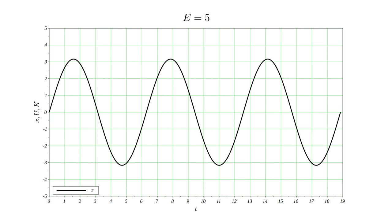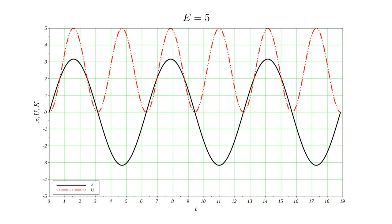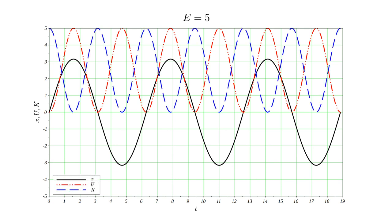Here is a plot of position x as a function of time for the E equals five case. It's a sine wave. For any other energy, we get the same curve, only with a different amplitude. Plotting potential energy versus time, it is proportional to the square of position — a sine wave at twice the oscillation frequency, varying between zero and the total energy E. Kinetic energy is the difference of the constant total energy and the potential energy. It is a vertically mirrored version of the potential energy curve, and as a result, the average kinetic energy equals the average potential energy.